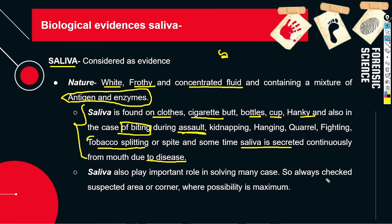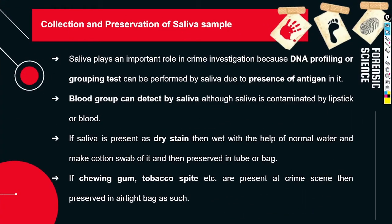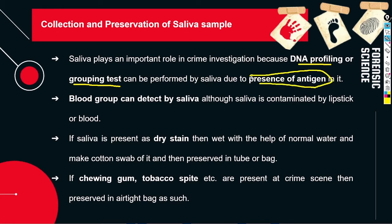We need to check the suspected areas where there is maximum possibility to get saliva, and check all areas if saliva is present or not. Saliva is important because DNA profiling and blood grouping tests are also made from it. Antigens present in the saliva can be used for grouping and DNA profiling, and if we have done these two things with saliva, then our investigation process becomes very easy.